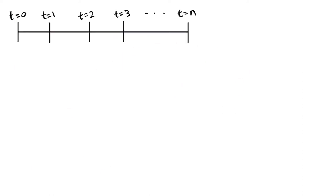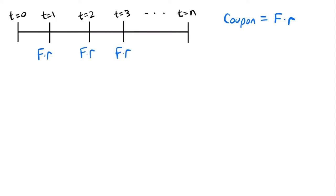To calculate the price of a bond, look at this timeline. Starting at time zero, we have time equals one, two, three, all the way up to time equals n. These time periods represent various coupon periods, where every period starting with time equals one, we are paying a coupon. A coupon equals the face value F times the coupon rate r, so each coupon period has a payment of F times r.